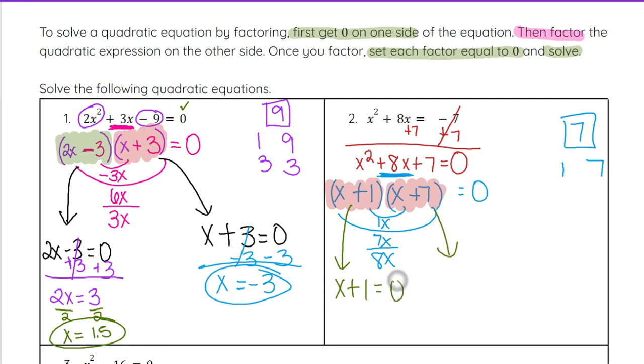And then we subtract 1 from both sides to give us x equals 0 minus 1 is negative 1. And then subtract 7 from both sides over here, and that will give us x equals 0 minus 7 is negative 7.